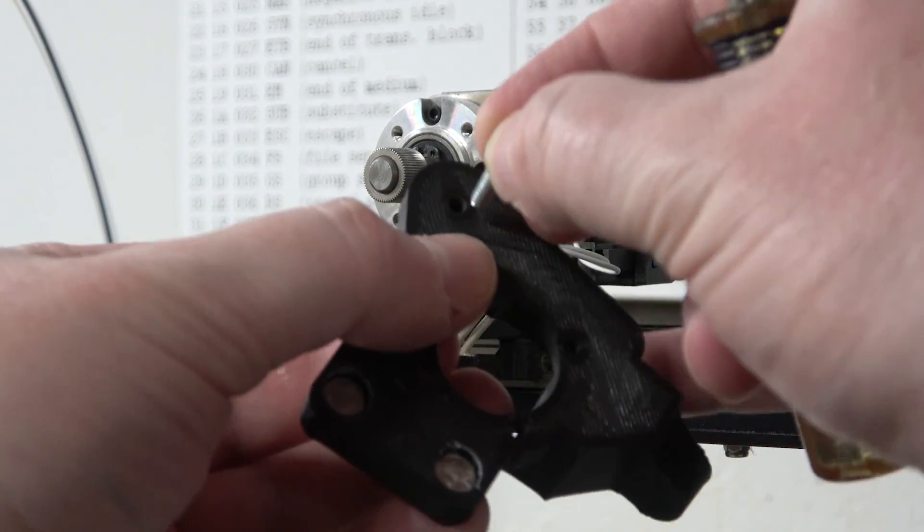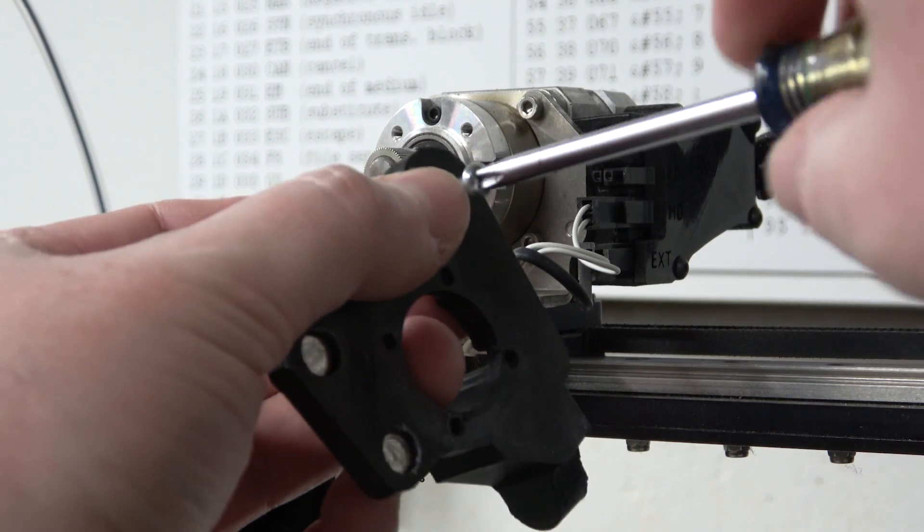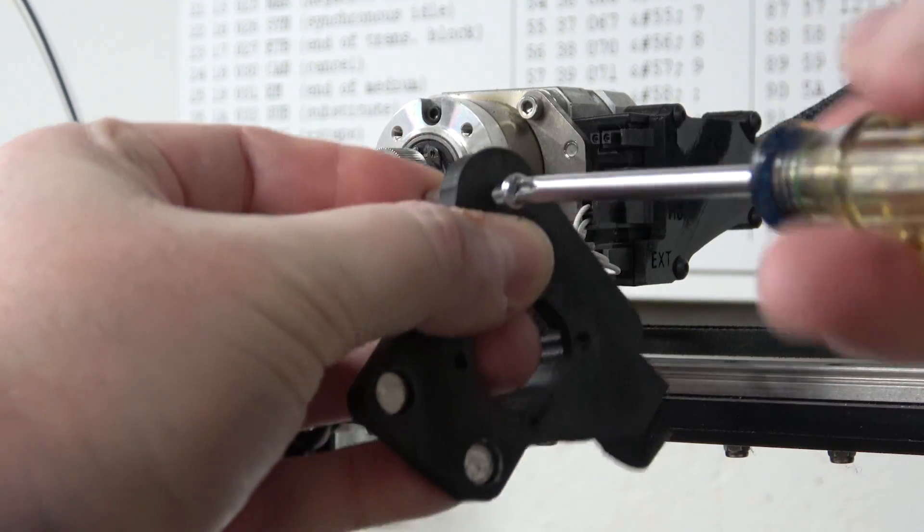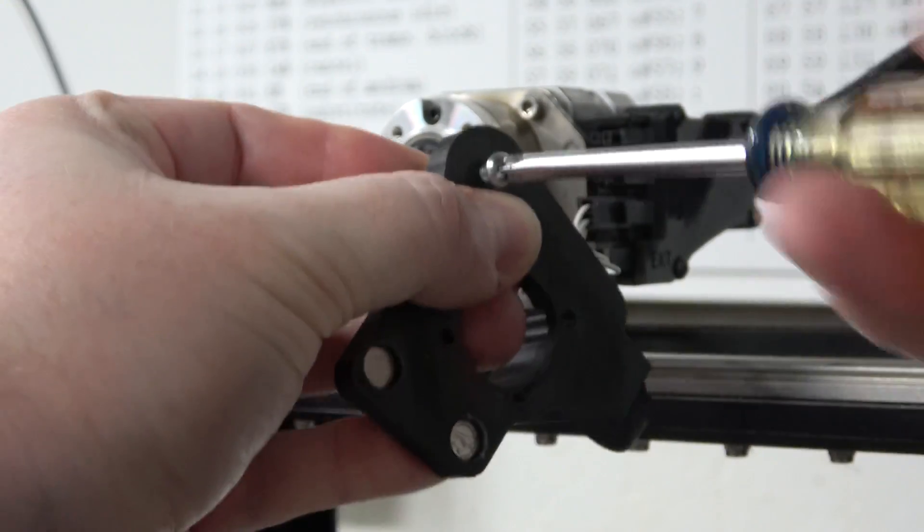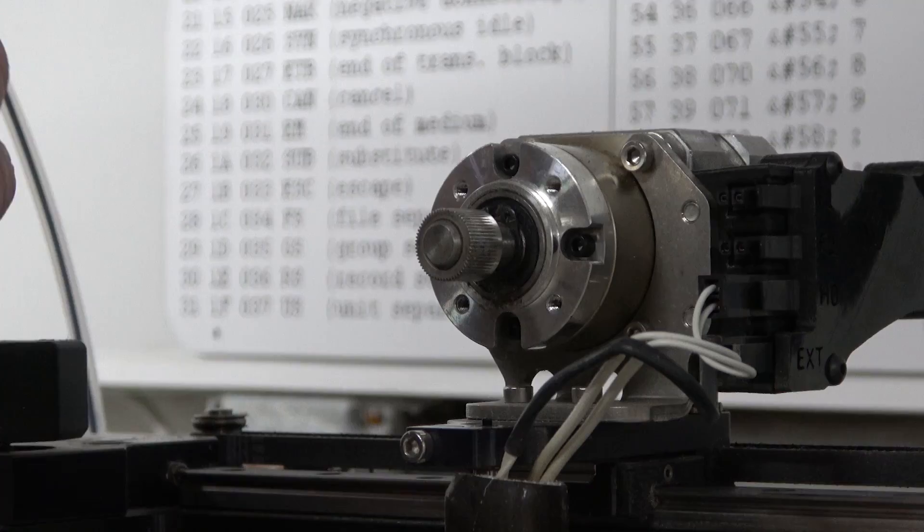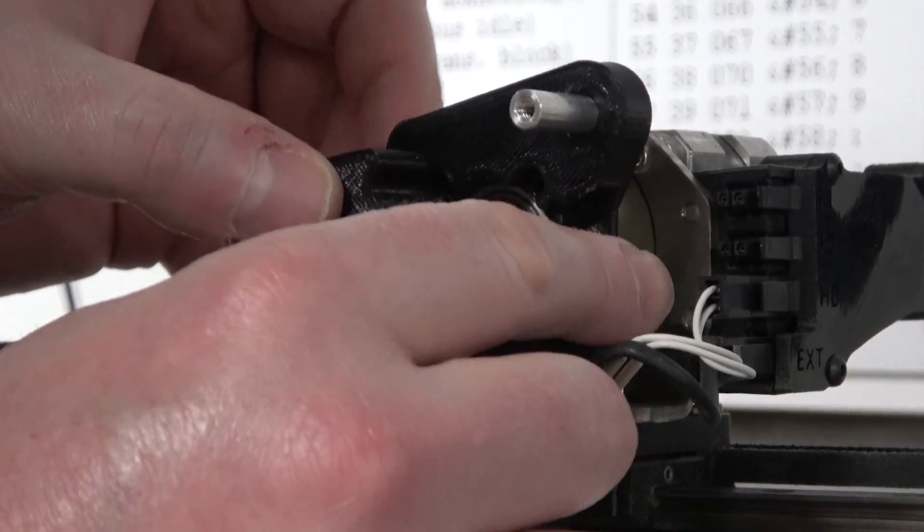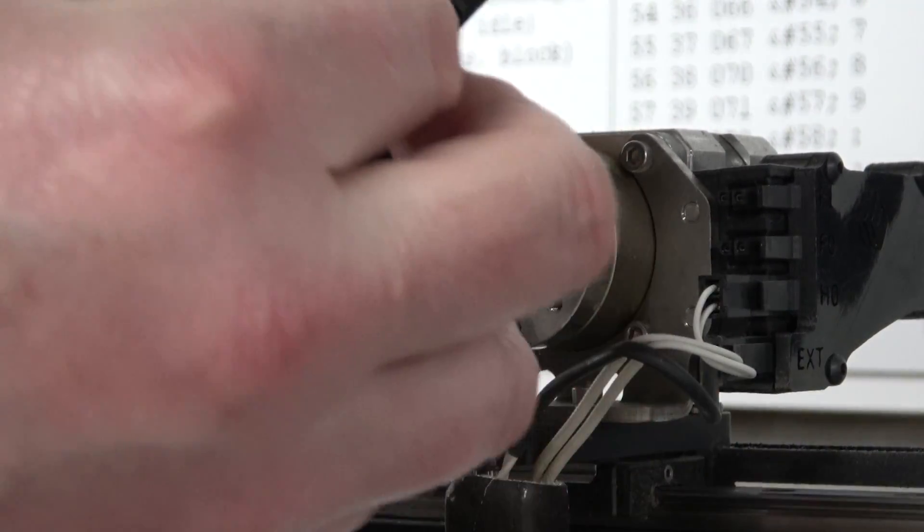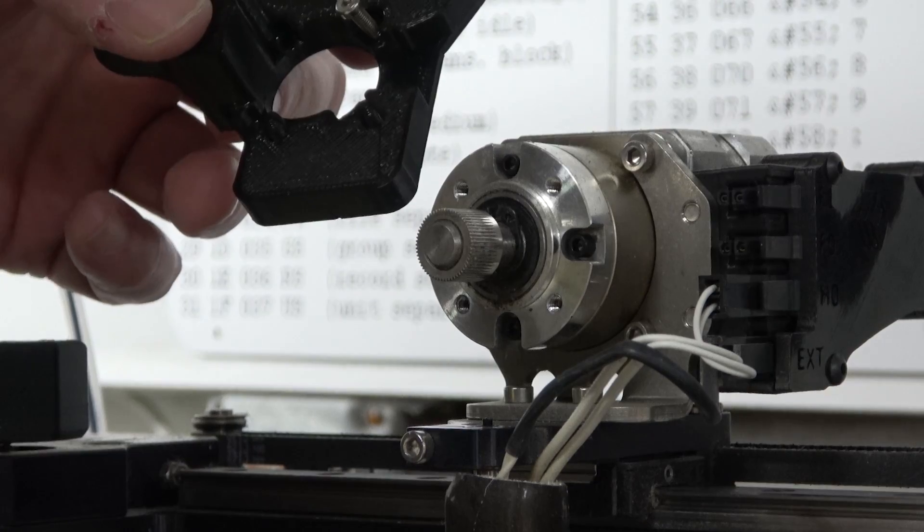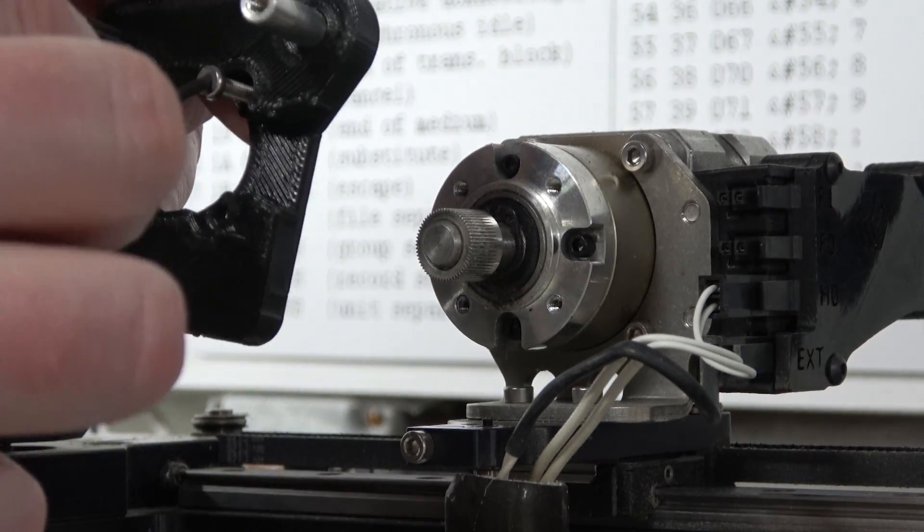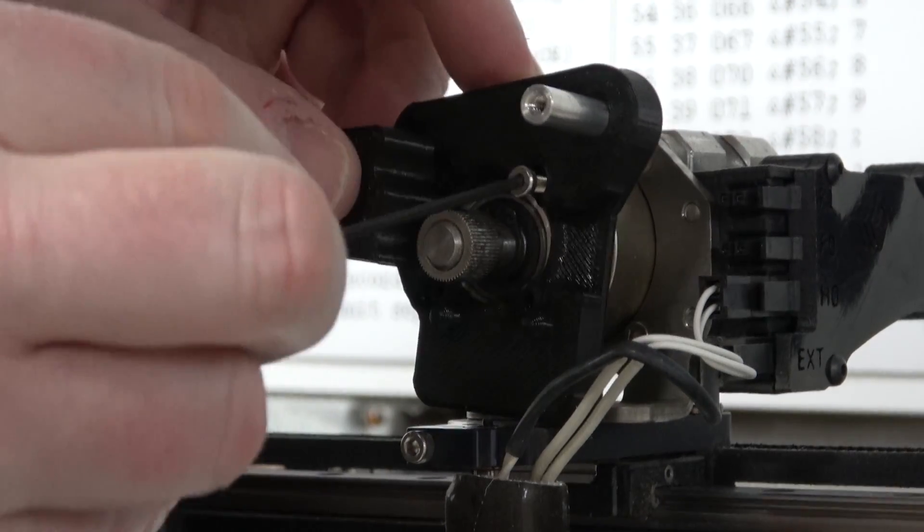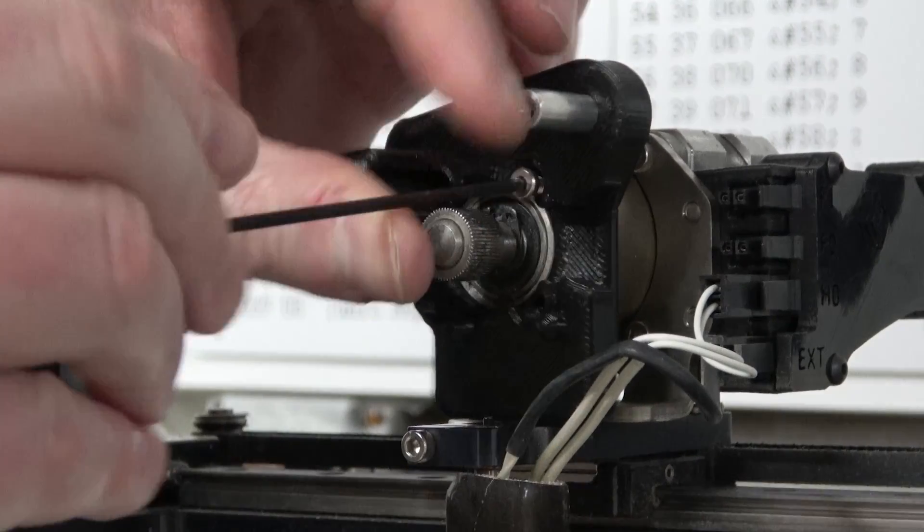So yeah this has imperial and metric in it. Please send me your anguished comments from almost every other country on earth besides America. So let's put this in place and we're going to affix it with four three millimeter by 10 millimeter machine screws. That matches up what's on the gearbox of the world-famous MakerGear extruder.